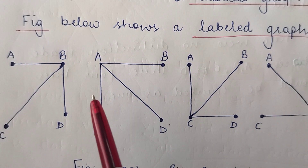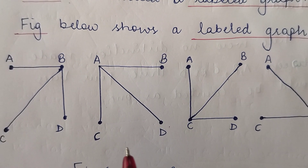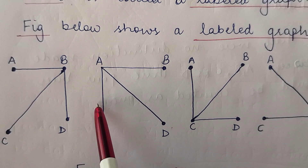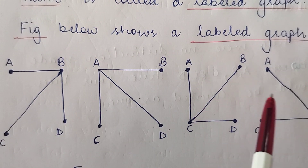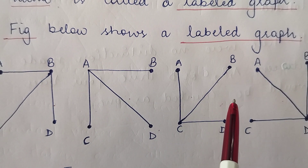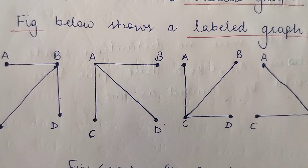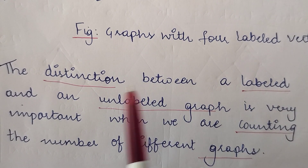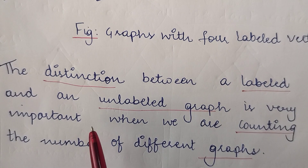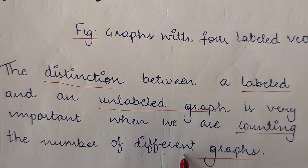But since they are labeled, which changes the entire scenario. So when the graphs are labeled — that means when the graphs have labeled vertices — even if the graphs are isomorphic, they will be counted as different graphs. So these four labeled graphs will be counted as four different graphs, irrespective of the fact that they are isomorphic. This is what we are trying to tell here: the distinction between a labeled and an unlabeled graph is very important when counting the number of different graphs. If they are unlabeled, they'll be counted as one, and if they're labeled, they'll be counted as four.